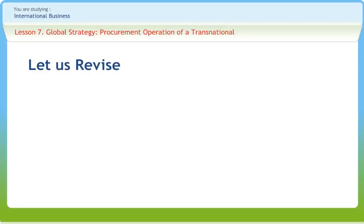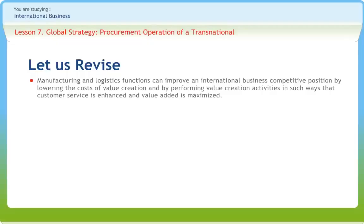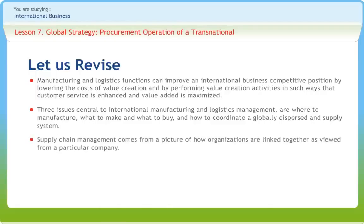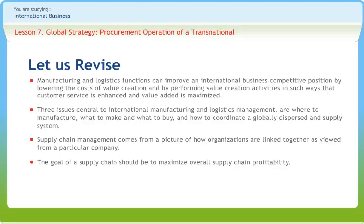Before we end, let us briefly revise what we've studied. The lesson explained how efficient manufacturing and logistics functions can improve an international business's competitive position by lowering the cost of value creation, and by performing value creation activities in ways that enhance customer service and maximize value added. We examined three issues central to international manufacturing and logistics management: where to manufacture, what to make and what to buy, and how to coordinate a globally dispersed supply system. The goal of a supply chain should be to maximize overall supply chain profitability, with key decision phases being supply chain strategy or design, supply chain planning, and supply chain operations.